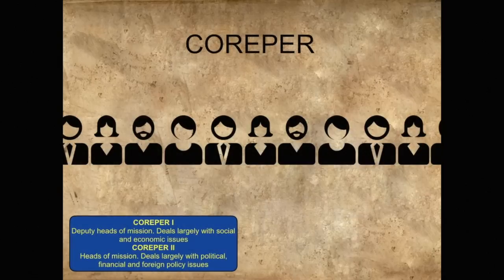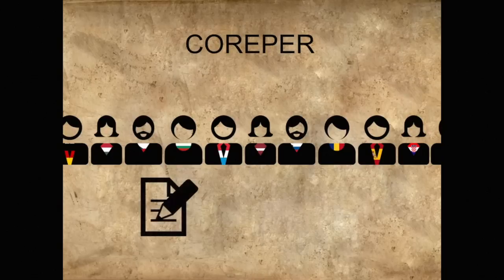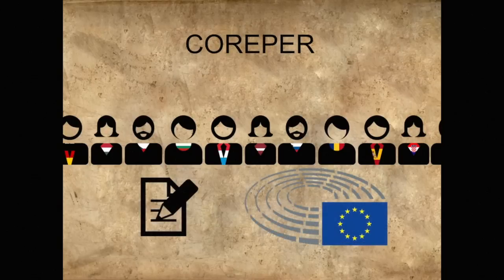COREPER, in contrast, is composed of representatives from the States themselves, such as ambassadors and national civil servants. They prepare the work of the Ministers taking seat in the Council, and where the Council shares power with Parliament, COREPER works with them.